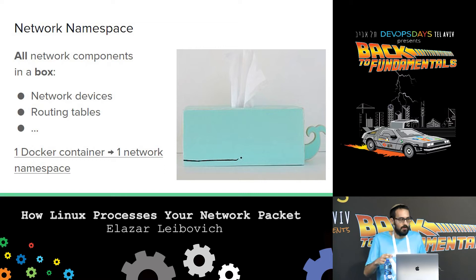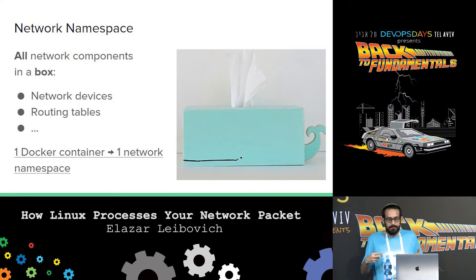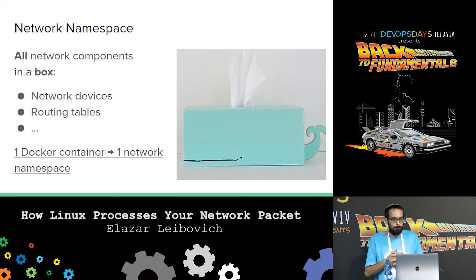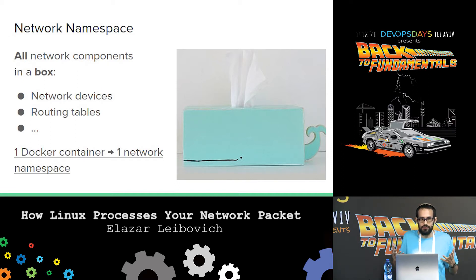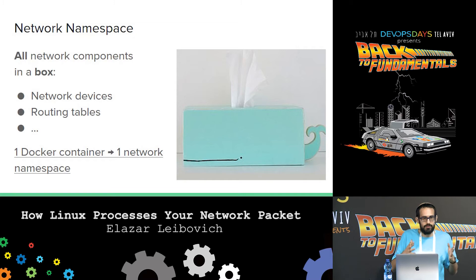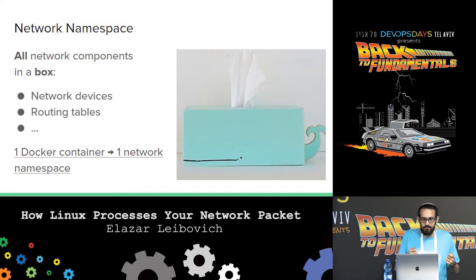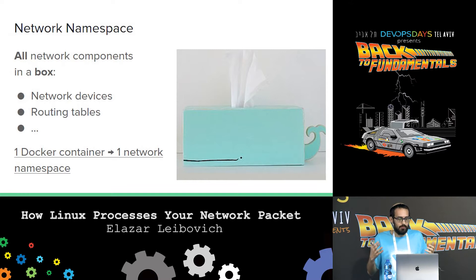There are three networking concepts I need to introduce to explain how this happens. The first one is network namespace. Network namespace is all network-related things — like routing tables, network devices — in a box, isolated. Every Docker container by default starts in its own network namespace. Network namespace allows isolation of everything related to networking. Every process is in a single network namespace, and every network device in your machine is in a single network namespace. Your laptop starts with a default network namespace that everything is in by default.